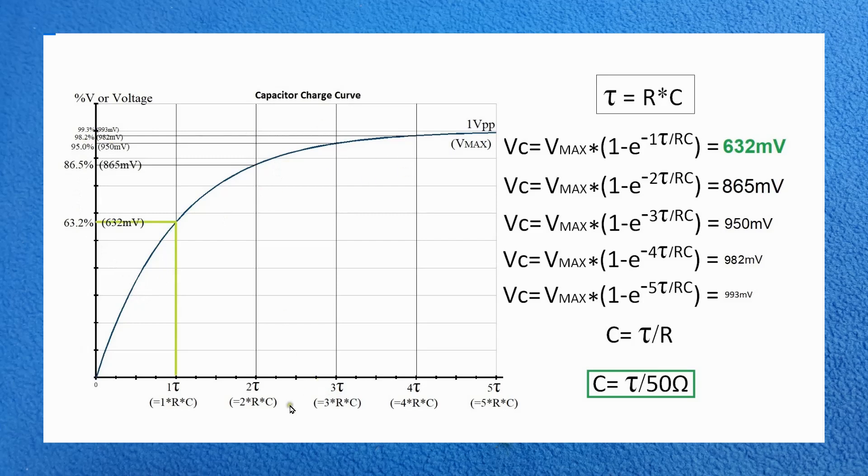I'm only interested in the first period of time, the first tau, to calculate when the capacitor gets 63.2 percent of the voltage I'm applying. In my case I'm applying one volt, so I'm interested when my capacitor reaches 632 millivolts.